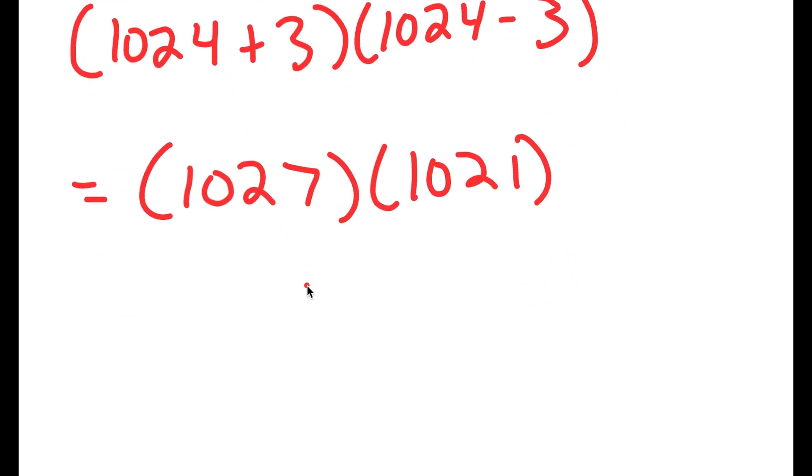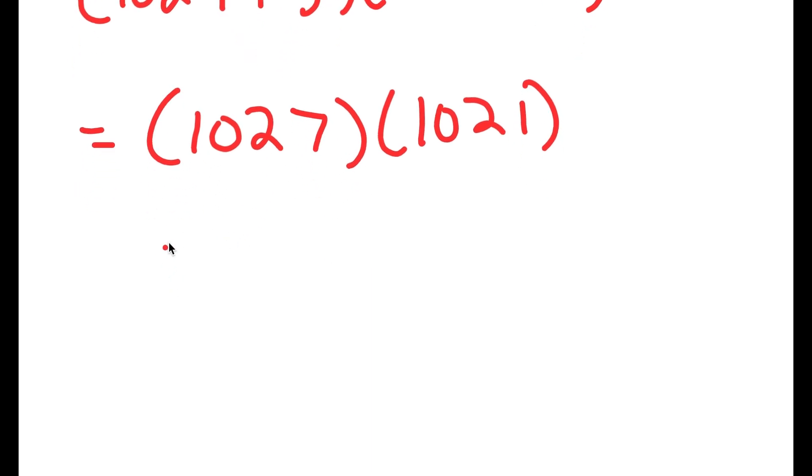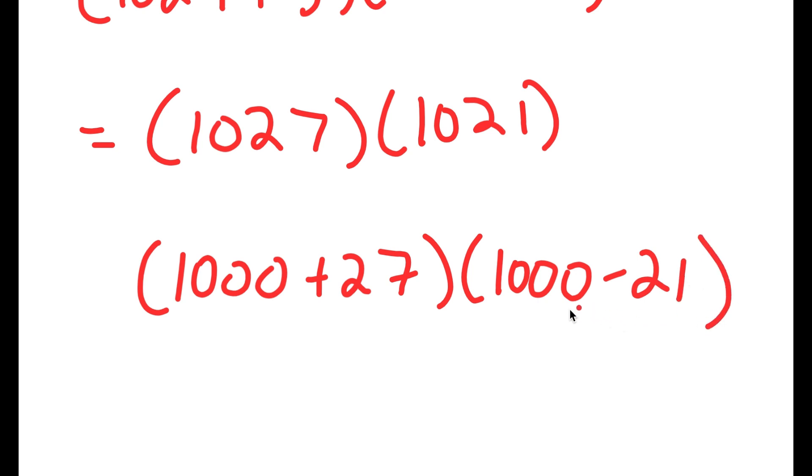Now, we can obviously multiply this like in this form, but there is a simpler way to multiply these two numbers. So what I'm going to do is rewrite this as 1000 plus 27 times 1000 plus 21.